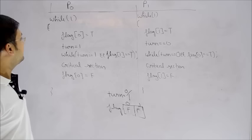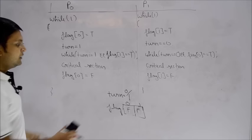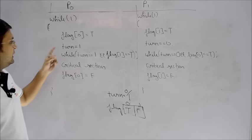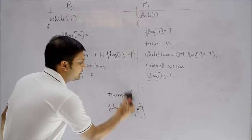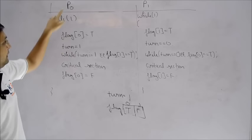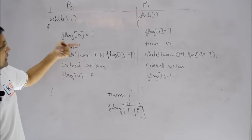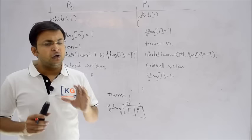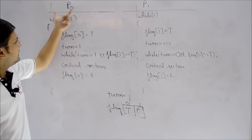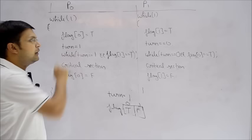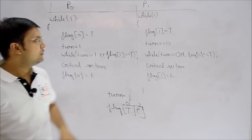Let's execute the logic. Flag of 0 is set to true — process P0 says it's interested in entering the critical section. Turn is set to 1. So process P0 wants to enter the critical section by setting flag[0] = true, but instead of setting turn to 0 (which would never give P1 a chance), we deliberately set turn to 1 — giving the turn to the other process.